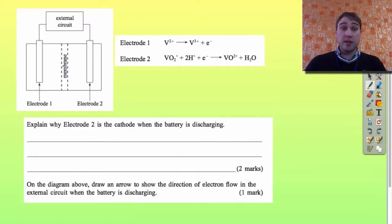Next part of the question says explain why electrode 2 is the cathode when the battery is discharging. If we look at our equation for electrode 2, we look at which side the electrons are on. They're on the left-hand side here. So if it's on the left-hand side, that means reduction is happening. Cathode, reduction. So reduction happens at the cathode.